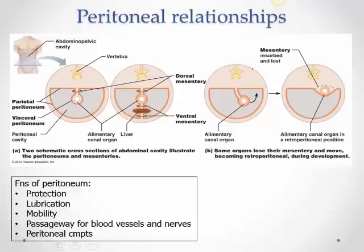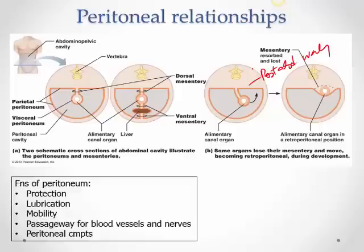In the abdominal cavity, there are many organs, and it's not possible for every organ to have a double fold of peritoneum. As organs invaginate, some get plastered to the posterior aspect of the abdominal wall.